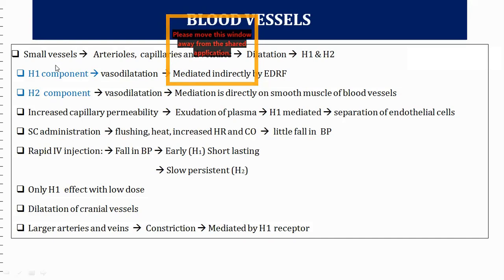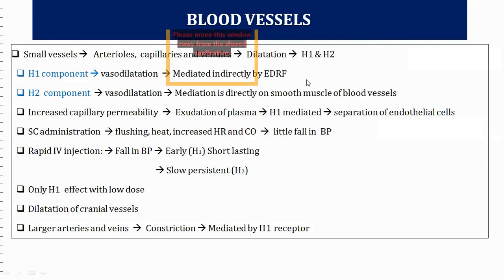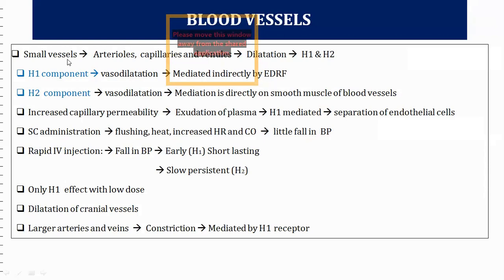The H2 component on small blood vessels also causes dilation, but here the effect is directly on the smooth muscle. H1 acts indirectly by releasing nitric oxide, which activates smooth muscle relaxation. H2, however, is directly present on the smooth muscle — causing relaxation by inhibiting calcium release.